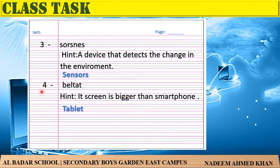Number four — jumble word: B E L T A T. Hint: its screen is bigger than a smartphone — اس کی سکرین سمارٹ فون سے بڑی ہے۔ Answer: Tablet.